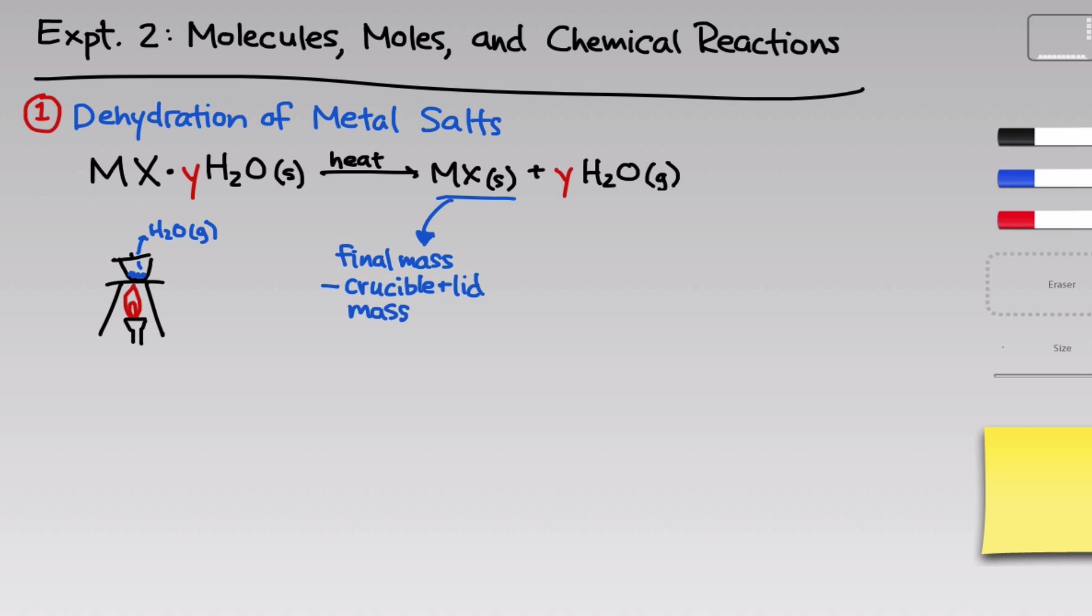The product mass will be smaller than the original mass of the hydrated salt because water has been lost. According to the law of conservation of mass, the difference in mass between the initial sample and the final product is the mass of the water that was lost. We measure the mass of water lost indirectly as delta M, the final sample mass minus the initial sample mass.